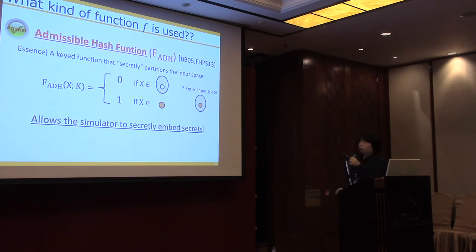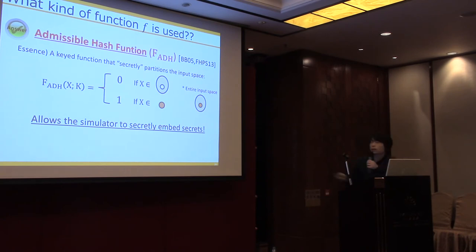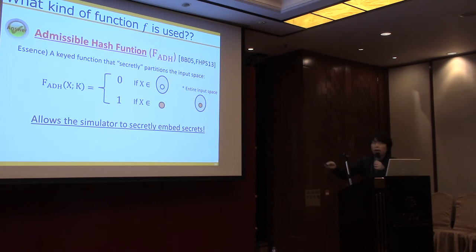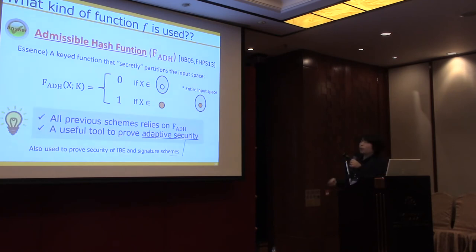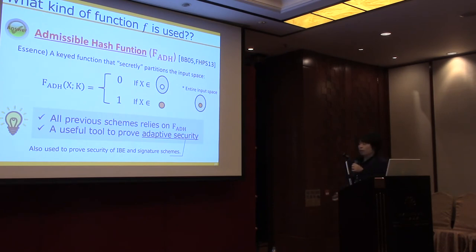What is used as this function f? Usually people use admissible hash functions, an information-theoretic object. In essence, it's a keyed function that secretly partitions the input space. The key k is only known by the person who instantiates it. On input x, it outputs 0 if and only if x is inside the partition (the gray area created by key k), and outputs 1 otherwise. This is a useful tool for the simulator to secretly embed secrets during simulation. All VRF schemes so far rely on admissible hash functions, also used for adaptive security in IBEs or signature schemes.